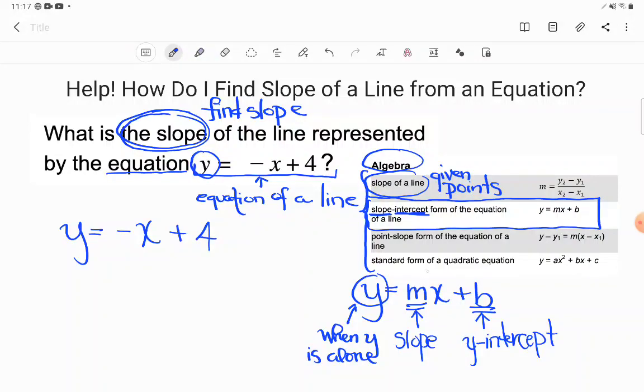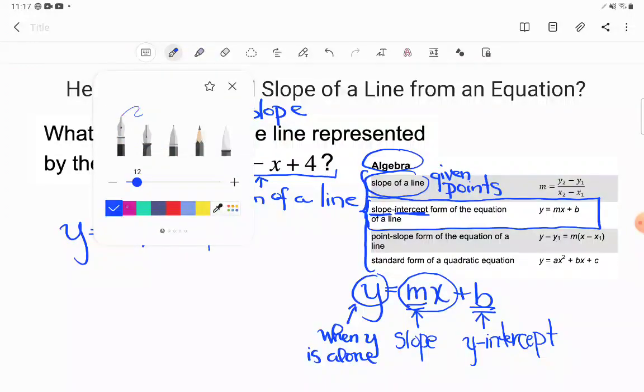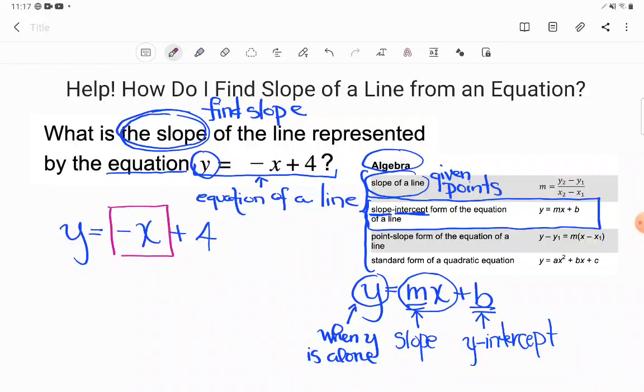So look at this equation back here. The M is shoved up against the X, meaning the M is multiplying with the X. So basically the slope is whatever number is multiplying with X. So I'm going to go straight to where my X is in this equation. And whatever number here is multiplying with X is the slope.